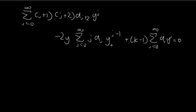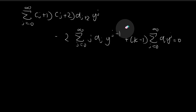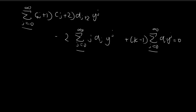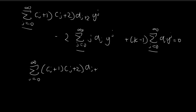I can absorb the y term into the summation symbol, so I can just get rid of the minus 1. Now all the summation symbols run from 0 to infinity and each term is attached with y to the power of j. So I can combine these three summation signs together — this is why I retained the j equals 0 term. Because these summation signs are identical, I can group all the coefficients together.